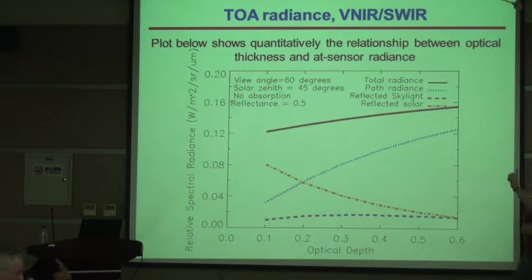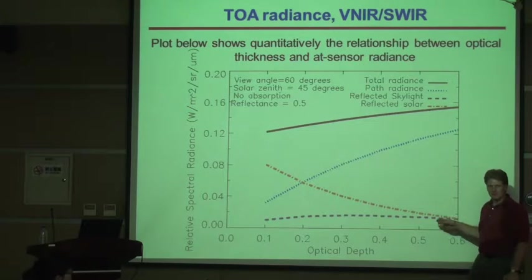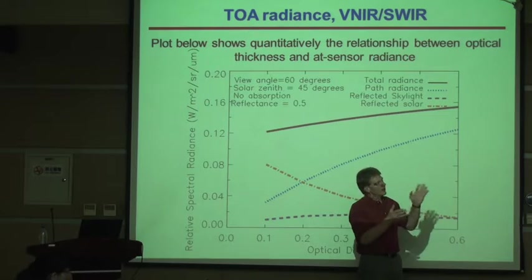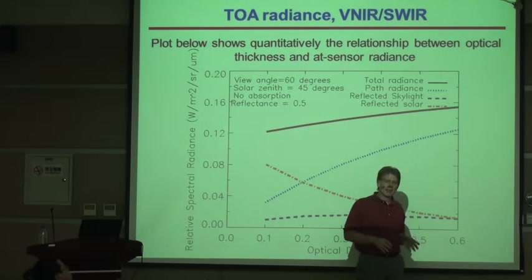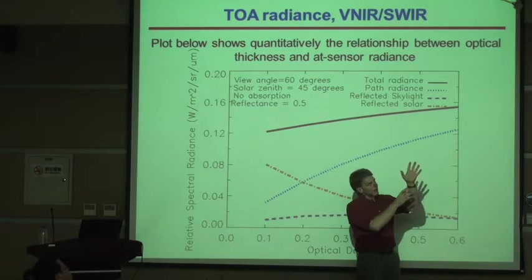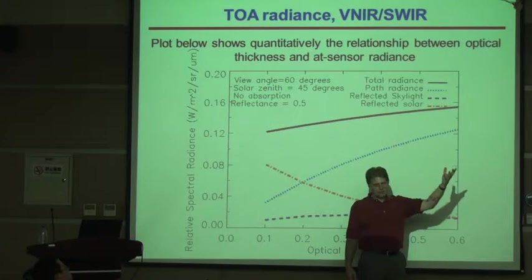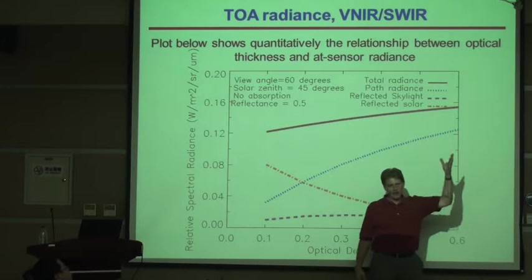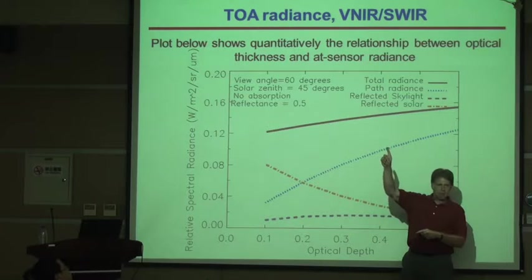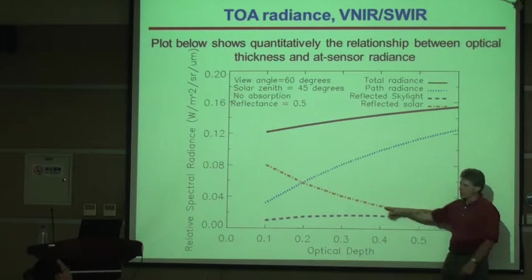That should make sense. If we could look at the sun and we start putting more material in the atmosphere, the sun would look dimmer — we get less energy. Likewise, the odds of getting a photon off the ground and through the atmosphere without interaction decreases as the atmosphere gets thicker. So I get a decrease in the total amount of direct solar energy.